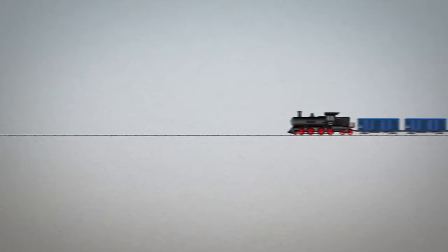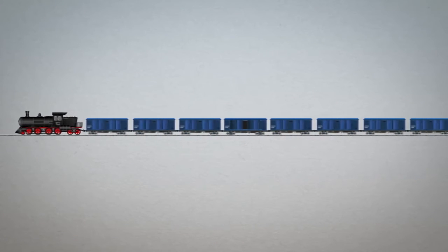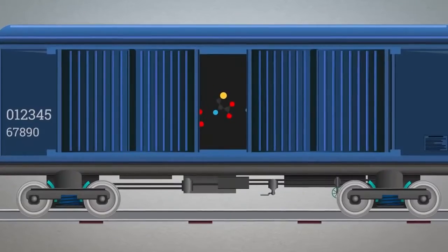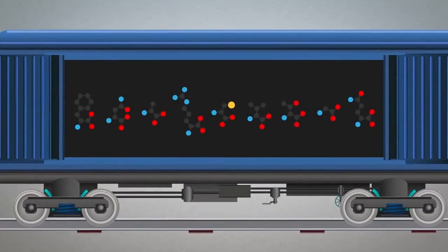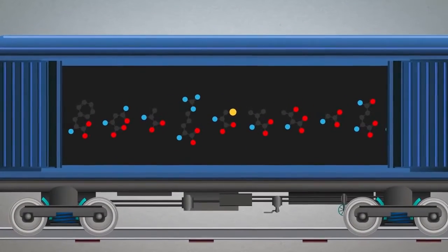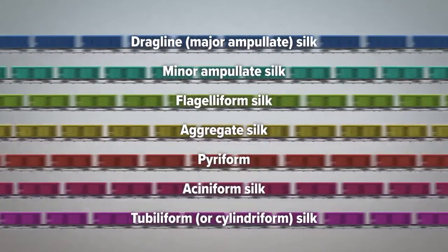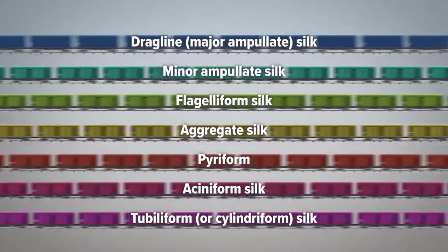Imagine a silk molecule like a long train made up of different boxcars. Inside each type of boxcar is a string of amino acids. In any one type of silk, we see the same boxcar over and over all the way along the train. This unique pattern is what makes each silk so specialized.